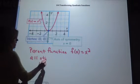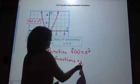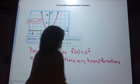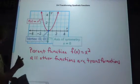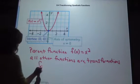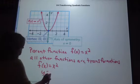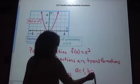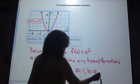All other functions that are not this function are transformations. A transformation is a slide — left and right, up or down. We know that this parent function, f of x equals x squared, is a quadratic function because we can write it in the form ax squared plus bx plus c, where a equals 1, b equals 0, and c equals 0.